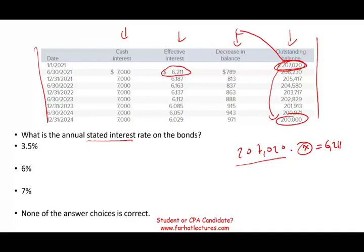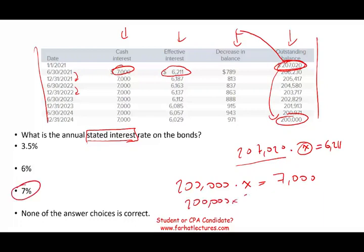They're asking us about the stated rate, not the market rate. The stated rate gives us the cash payment. So face value × stated rate = cash payment. What do we multiply $200,000 by to get $7,000? That's 3.5% — but be careful, because the payment is done twice a year (June 30th and December 31st). Therefore the annual stated rate is 7%. So $200,000 × 7% × 0.5 = $7,000.